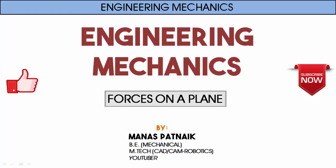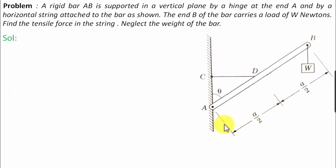Hi there guys, hope you're doing well. This is your friend and tutor Manas. Let's see what this problem has in store. A rigid bar AB is supported in a vertical plane by a hinge at end A and by a horizontal string attached to the bar as shown. The end B of the bar carries a load of W Newtons. Find the tensile force in the string.